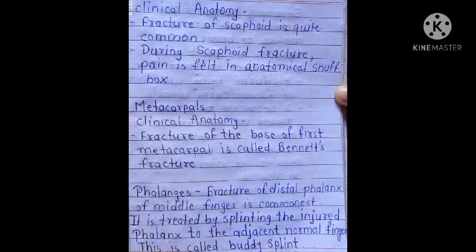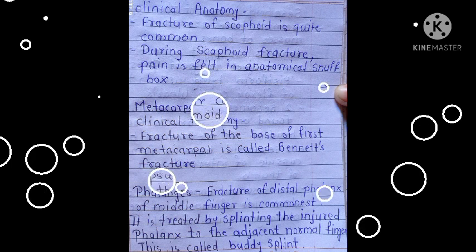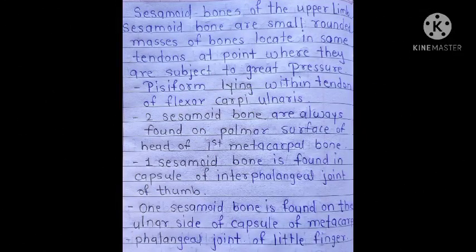For clinical anatomy of the carpal bones: fracture of the scaphoid is quite common; during a scaphoid fracture, pain is felt in the anatomical snuffbox. For metacarpals: fracture of the base of the first metacarpal is called Bennett's fracture. For the phalanges: fracture of the distal phalanx of the middle finger is the commonest one, and it is treated by splinting the injured phalanx to the adjacent normal finger — this is called buddy splinting.